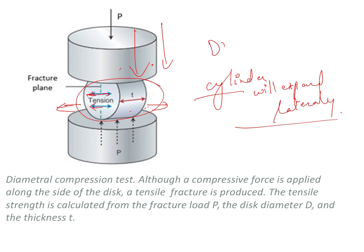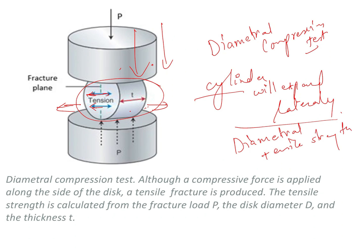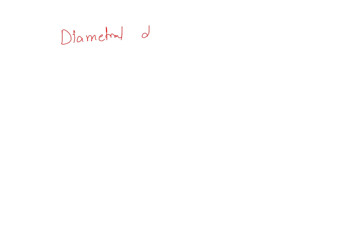This test is referred to as the diametral compression test, and the strength value obtained is the diametral tensile strength. In this method, the compressive load is applied by a flat plate on a cylindrical specimen or disc. Fracture should occur along the vertical plane. The diametral tensile strength is calculated as: 2F divided by (π × D × T).